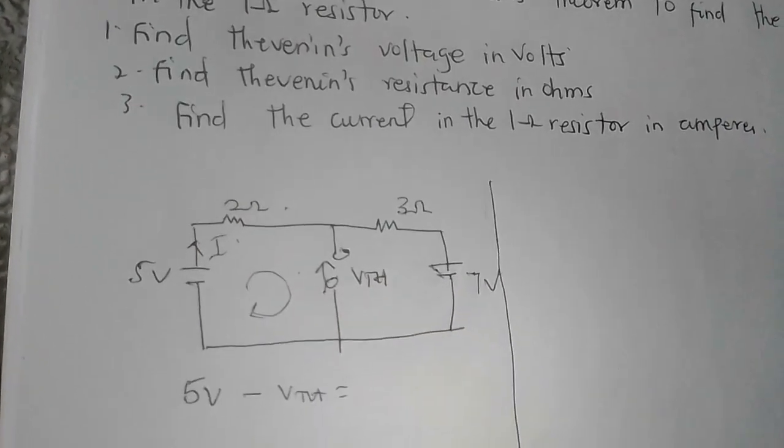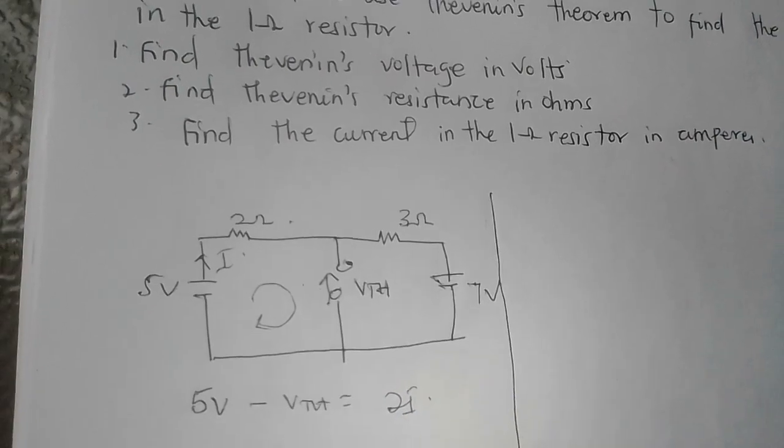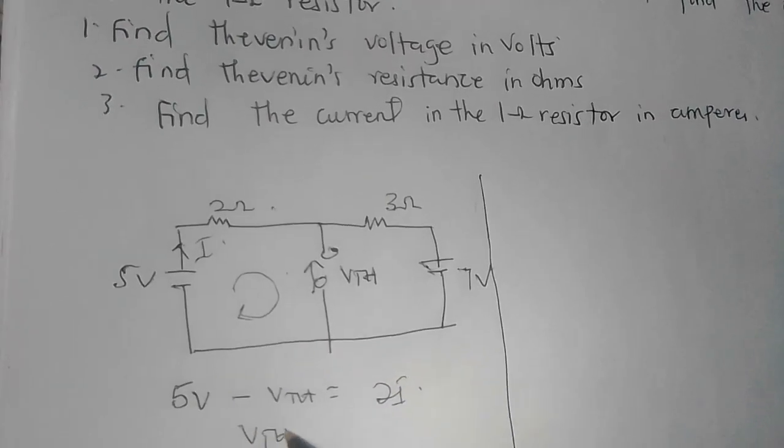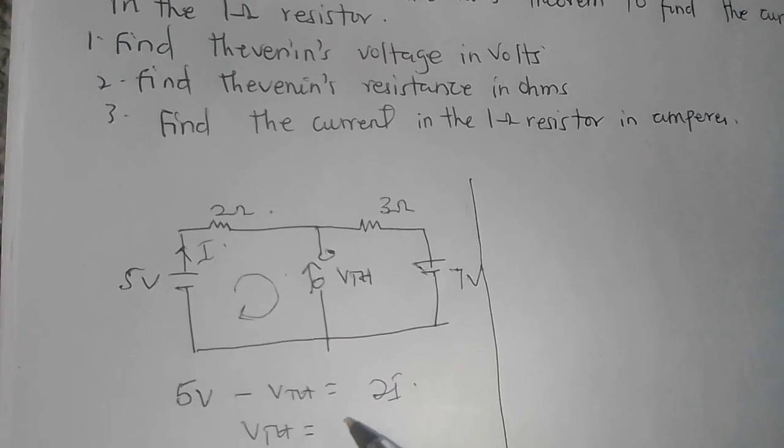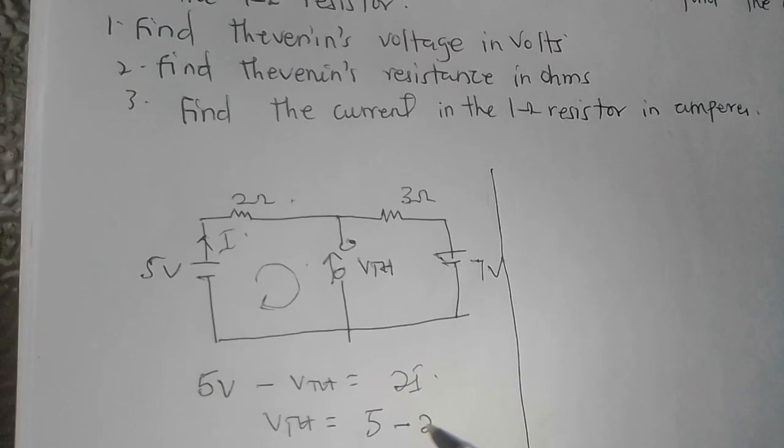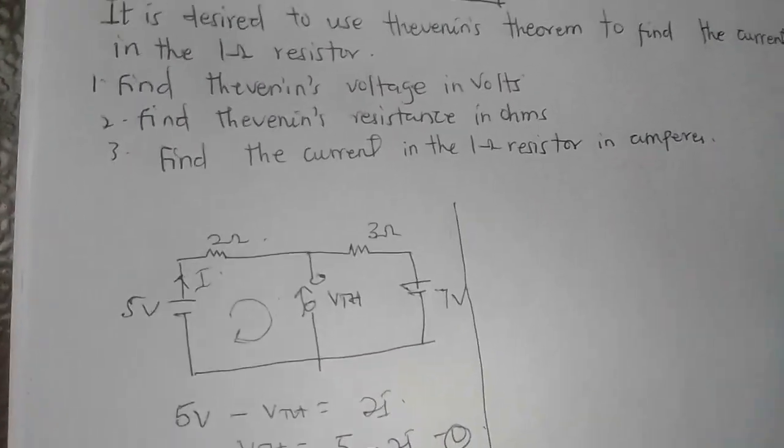Therefore VTH, making it the subject, is equal to 5V minus 2I. That is our first equation. The next thing is to take another loop where we can find our 2I.